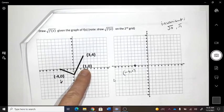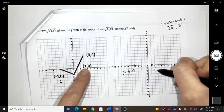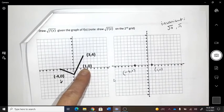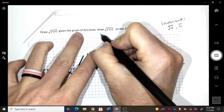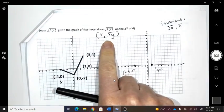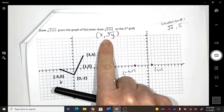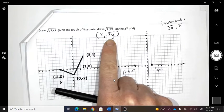The coordinate 1, 0 becomes 1, 0. It doesn't move. I'm square rooting the y. This is what I'm physically doing to my points. Does that make sense? Square rooting the y.